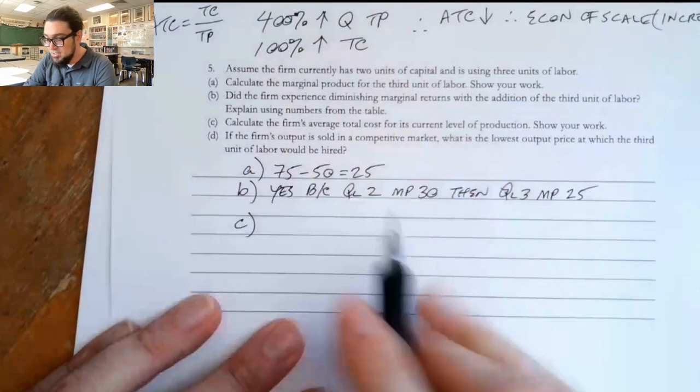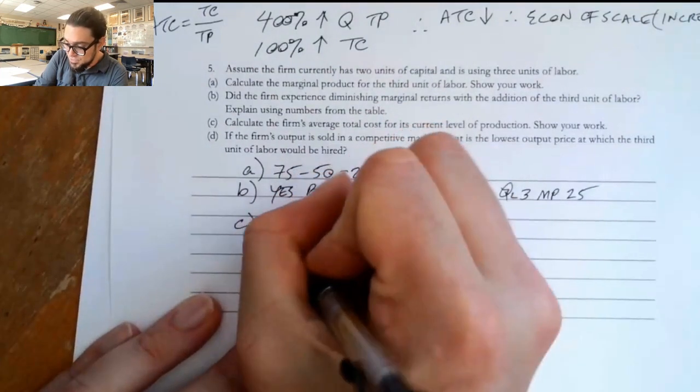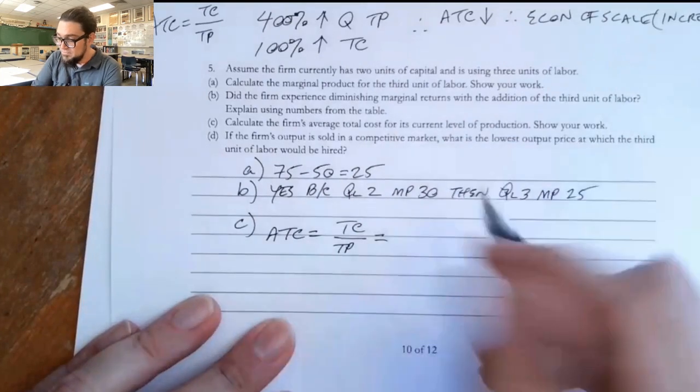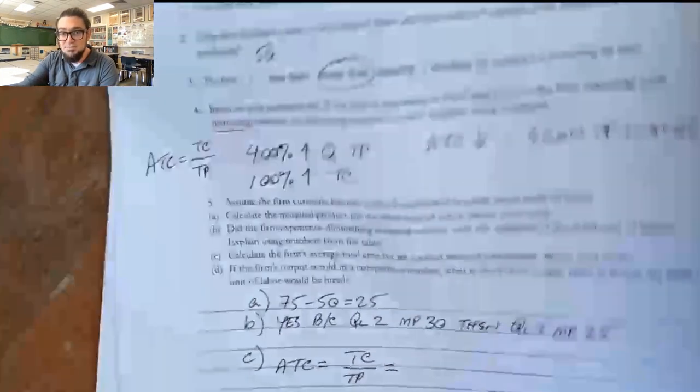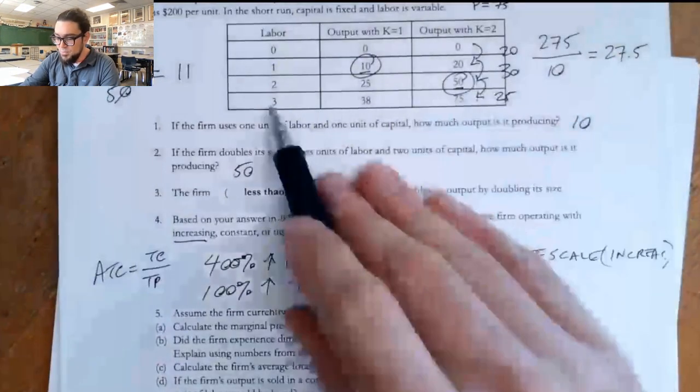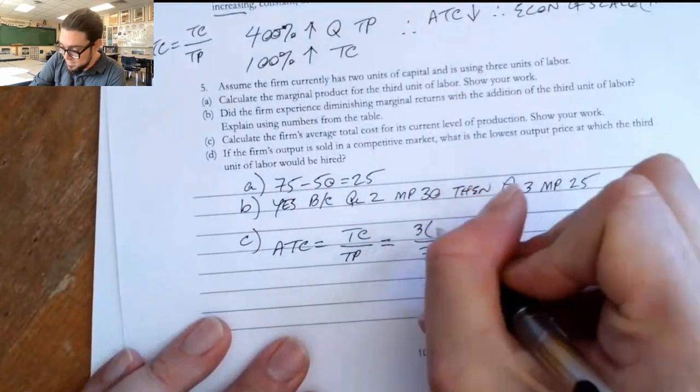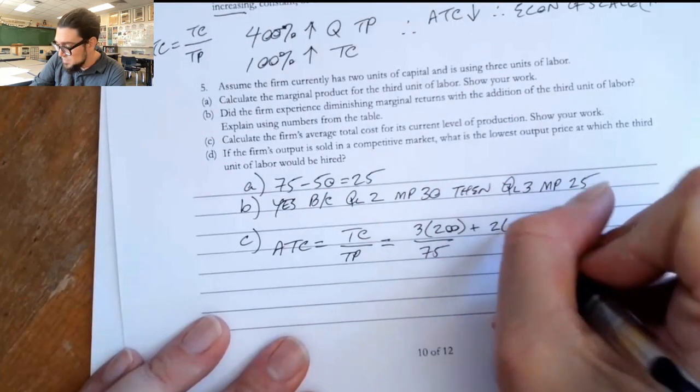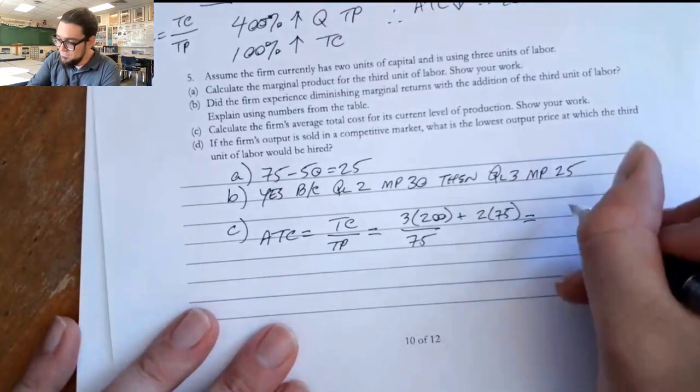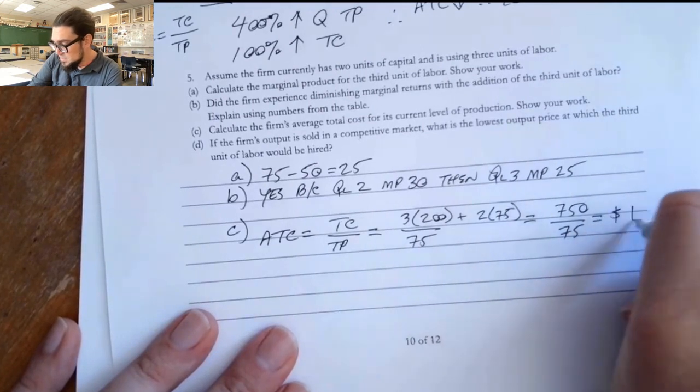Part C says, calculate the firm's average total cost for its current level of production. Show your work. So we know that average total cost equals total cost over total product. We're making 75. But the numerator is going to be three workers and two machines. So three workers is three times $200 plus two times $75. And so that's $600 and then $150 is $750 over 75 equals $10.